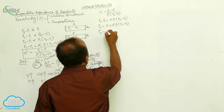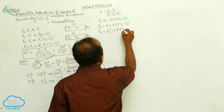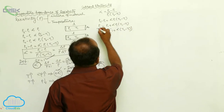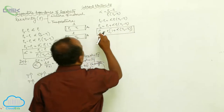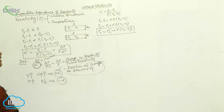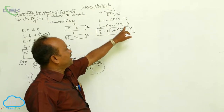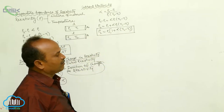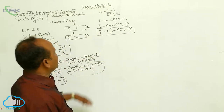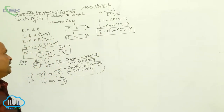Therefore, ρ₂ equals ρ₁ into (1 + α(T₂ - T₁)). This is the final resistivity formula. At the initial temperature, the initial resistivity is ρ₁. When temperature is increased from T₁ to T₂, resistivity is increased from ρ₁ to ρ₂. The final resistivity value is ρ₂ = ρ₁ × (1 + α(T₂ - T₁)).